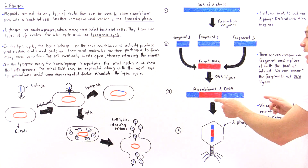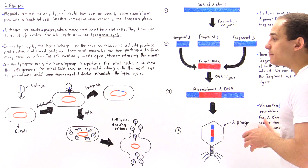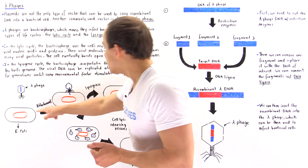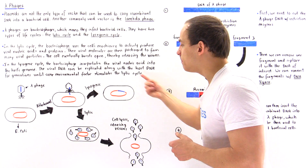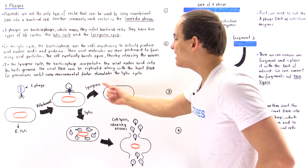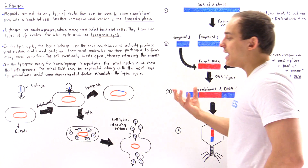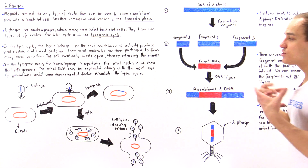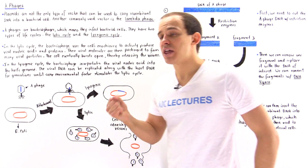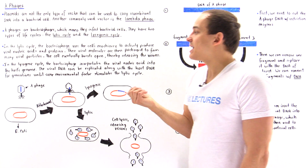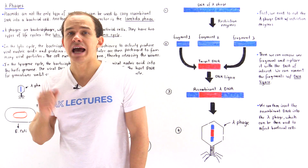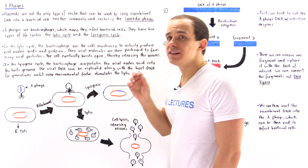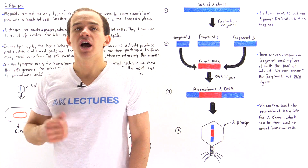We can then take this recombinant DNA molecule and place it back into the lambda phage, which can be mixed in with E. coli cells. If the environmental conditions are right, the lysogenic cycle will be followed and the cell will divide many, many times, replicating that DNA molecule each time. At the end, we have a beaker full of cells containing many copies of the DNA molecule of interest. We can then break the cells down and extract that DNA molecule. So we can use both plasmids and lambda phages as vector molecules — as carriers of DNA fragments.